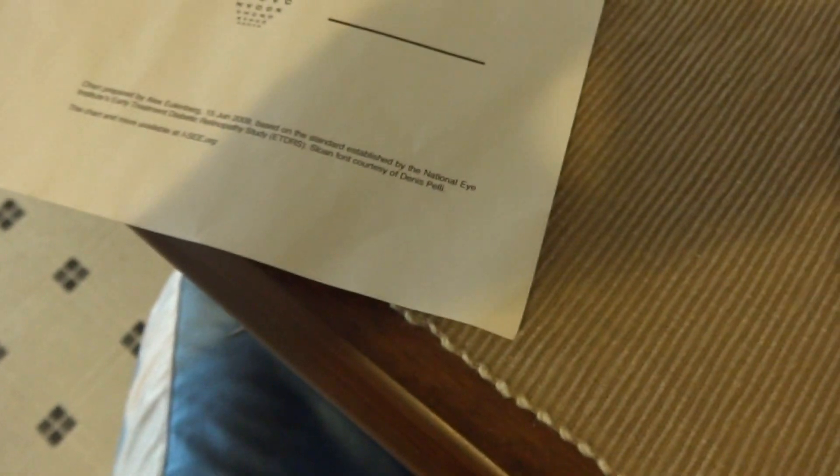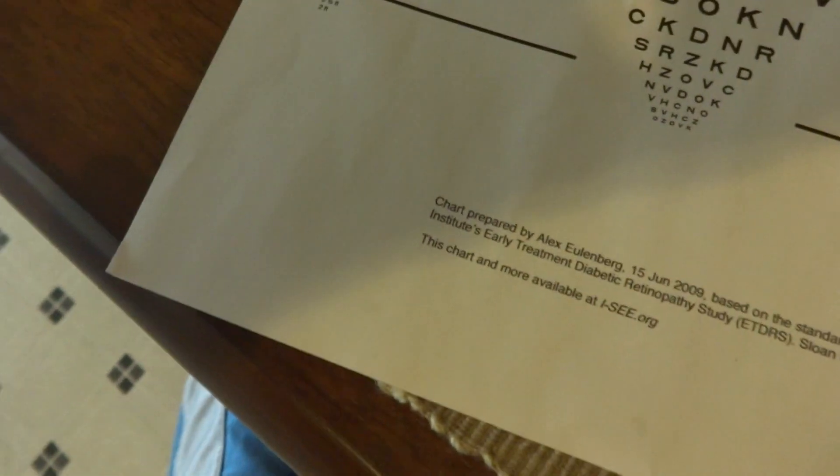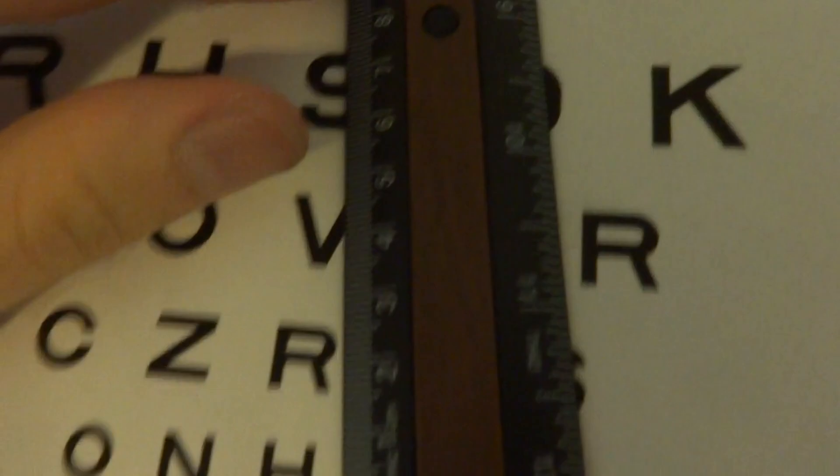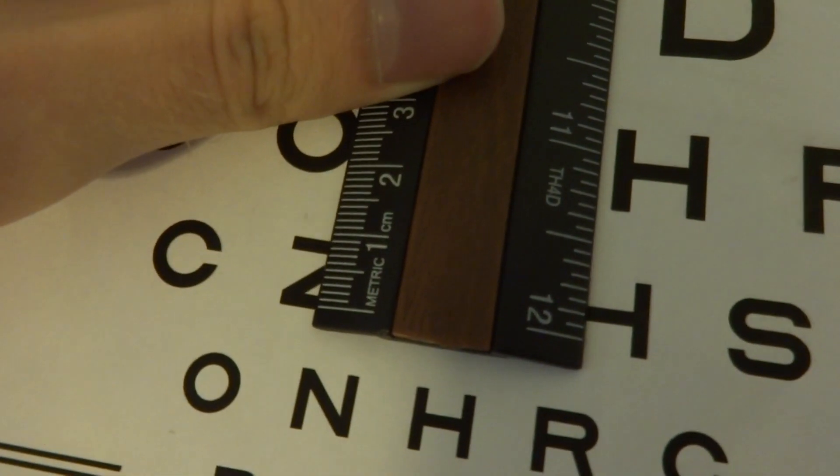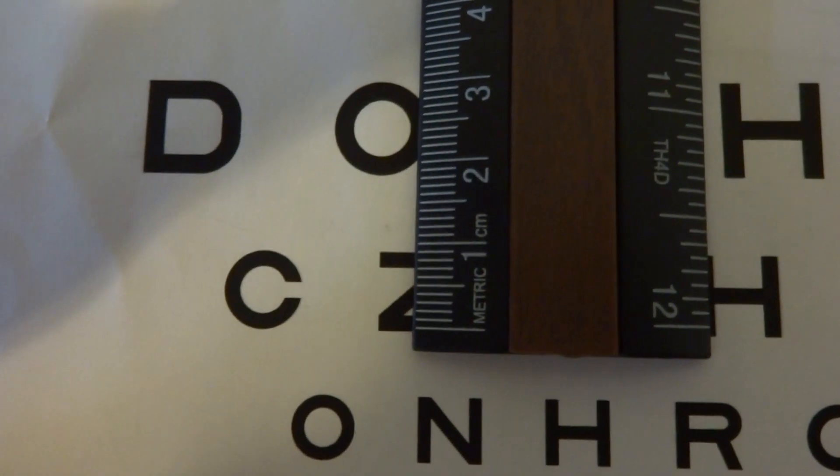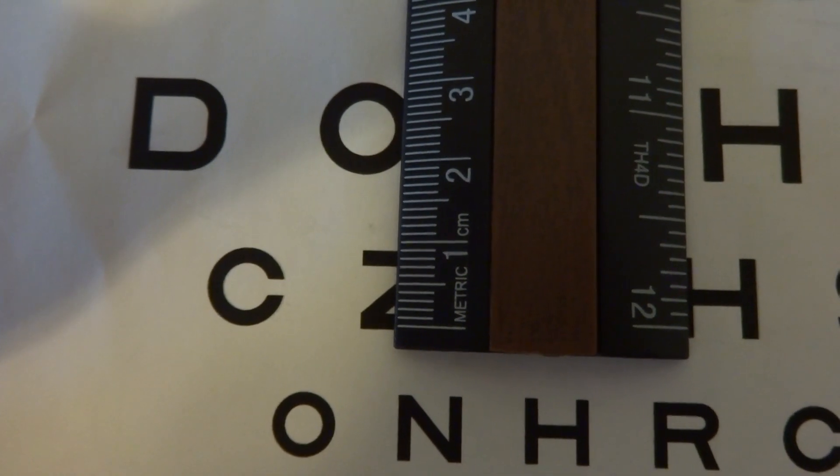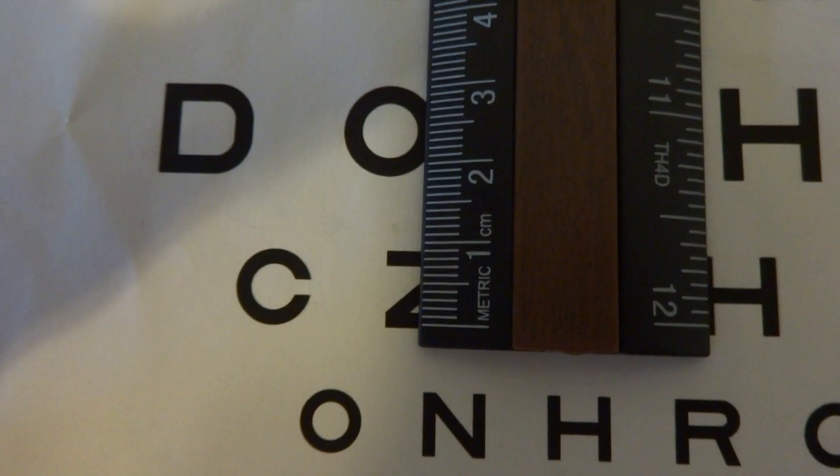So the size of each letter on the 6 meter or 20-foot line should be about 8.7 millimeters. And I don't know if you can tell, but that's pretty much exactly what it is. It's just short of that 9 millimeter line.